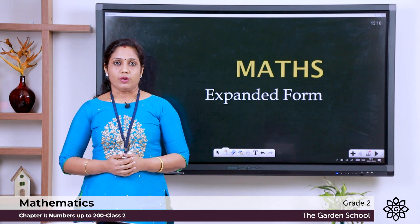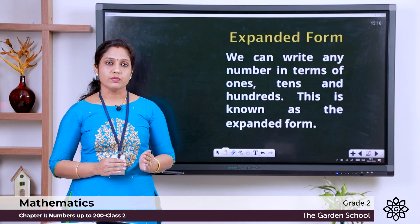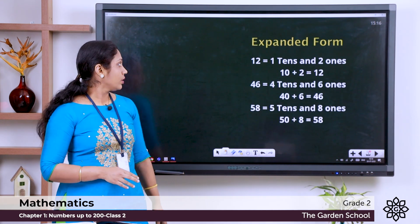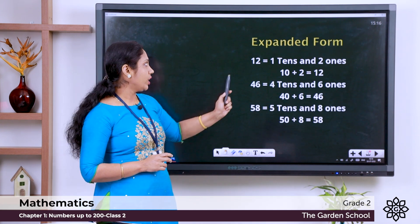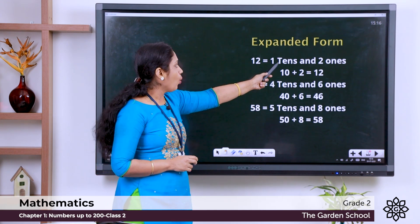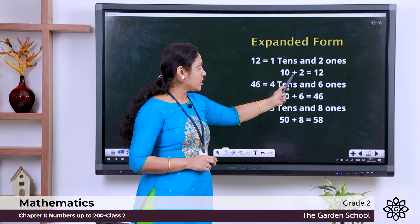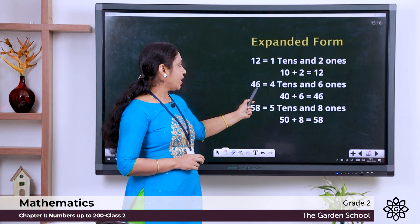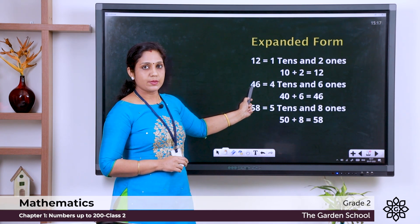What is expanded form? We can expand numbers and write them in terms of ones, tens, and hundreds. For example, the number 12 is a two-digit number. It has one ten and two ones, so we write it as 10 plus 2 equals 12. Second example: 46 — 6 comes in the ones place, 4 comes in the tens place, so we write it as 4 tens and 6 ones.